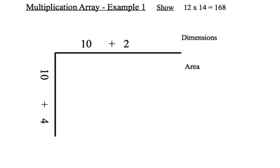So here's how it works. I have 12 times 14 equals 168. We know this to be true. We can check it on a calculator if we need to. What I'd like to do is break down the 12 into 10 plus 2 and break down the 14 into 10 plus 4.